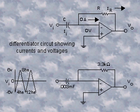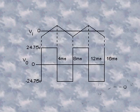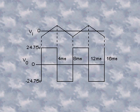For example, determine the output voltage of the op-amp differentiator for the triangular wave input shown. Beginning at time equals zero, the input voltage is a positive-going ramp ranging from minus 6 volts to plus 6 volts — a plus 12 volt change — in 4 microseconds. Then it changes to a negative-going ramp ranging from plus 6 volts to minus 6 volts — a minus 12 volt change — in 4 microseconds.